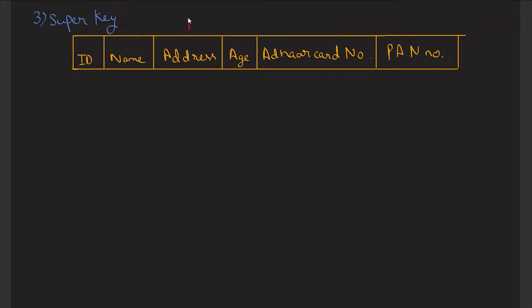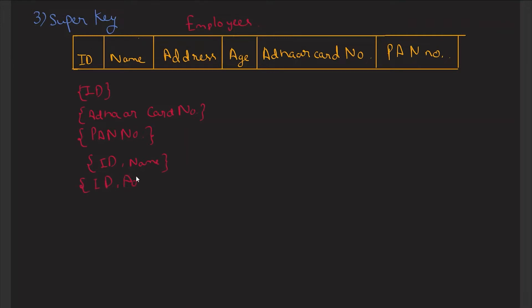Suppose this is an employees table. What will be the super keys from this table? ID alone can be a super key. ID with name can be a super key. ID with address can be a super key. Similarly, ID with age can also be a super key.